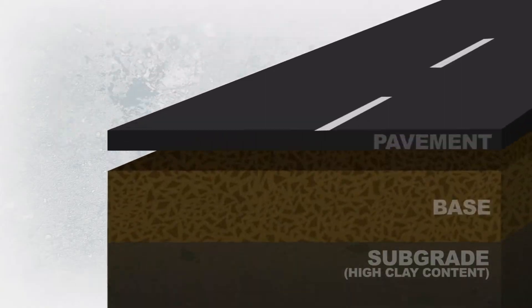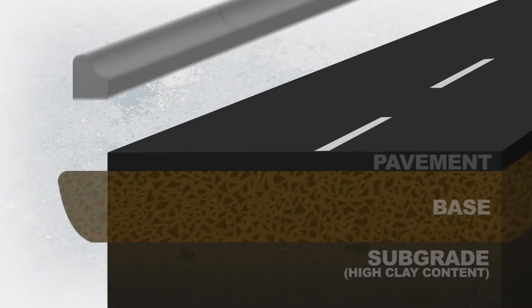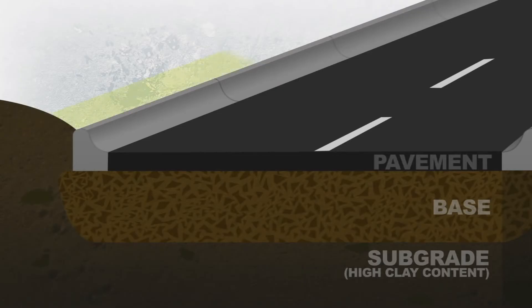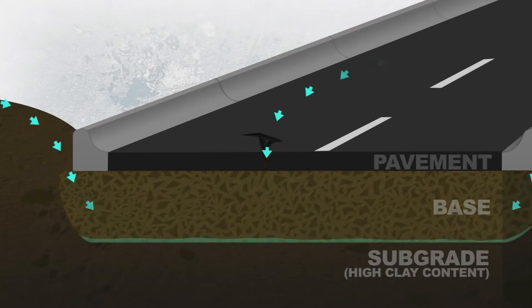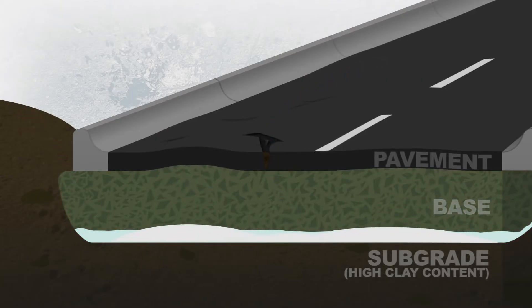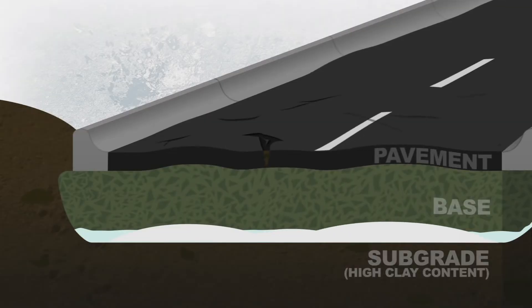A similar problem can occur where water in the base cannot drain to the sides because the water is constricted by curb and gutter, filled-in ditches, poor quality material on the shoulder or other structures that contain the water like a bathtub. Over time, the water accumulates, freezes and heaves the pavement upward, causing damage.